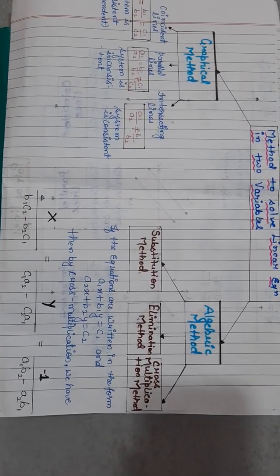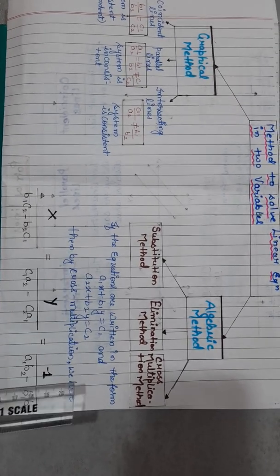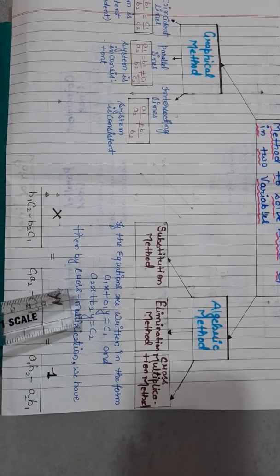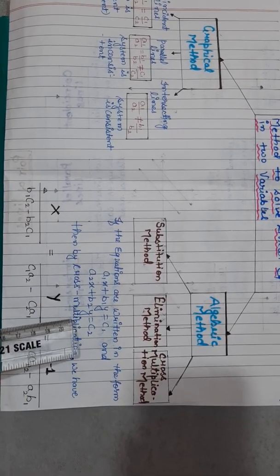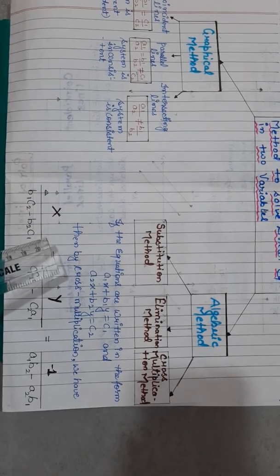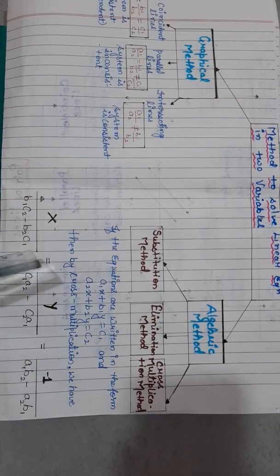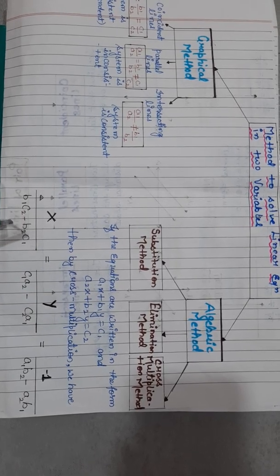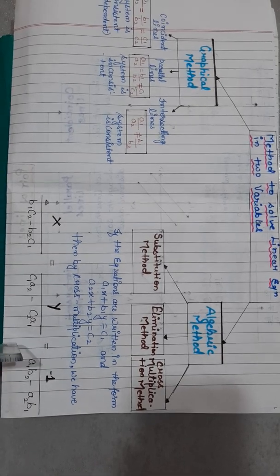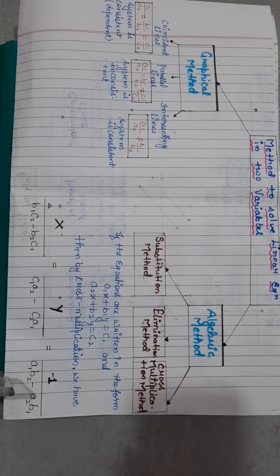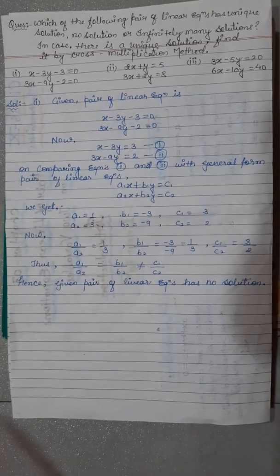In the unique solution case, if equations are written in the form a1x plus b1y equal to c1 and a2x plus b2y equal to c2, then by cross multiplication method we have: x upon b1c2 minus b2c1, y upon c1a2 minus c2a1, and minus 1 upon a1b2 minus a2b1.